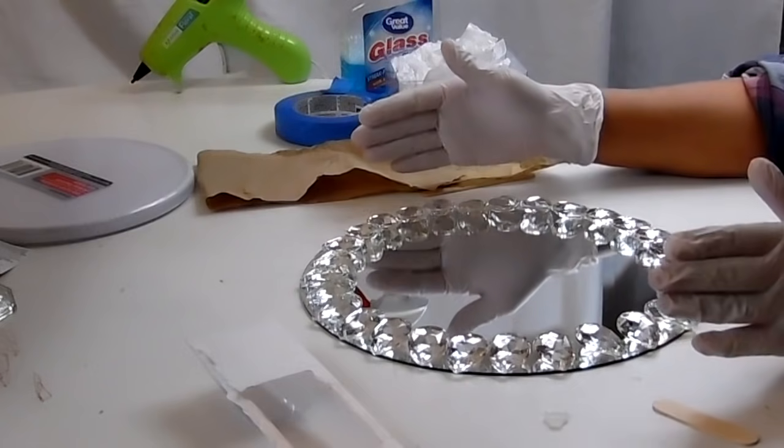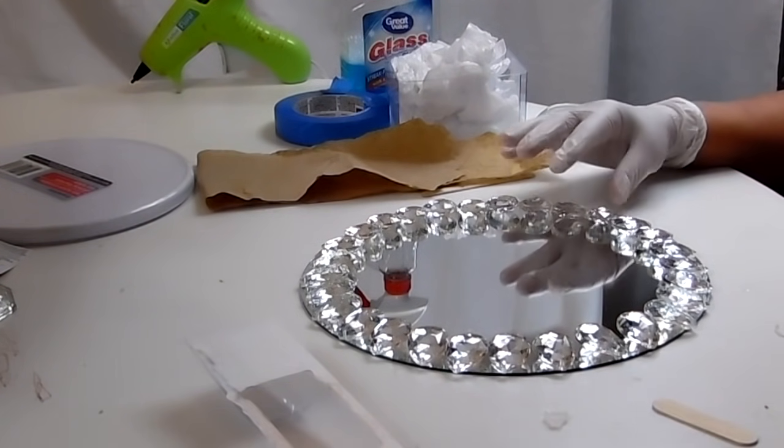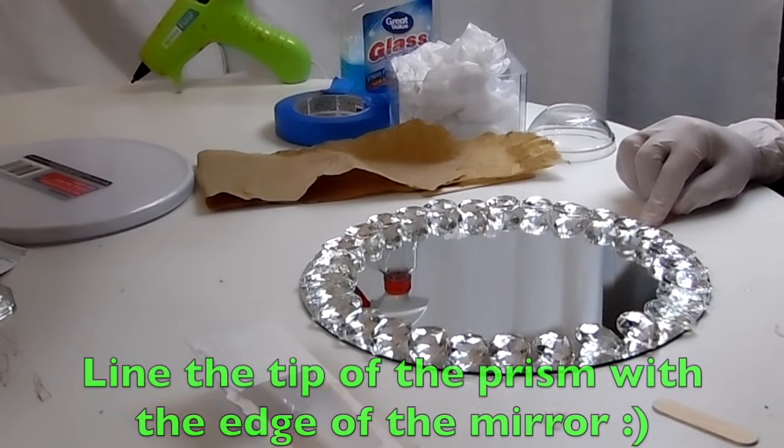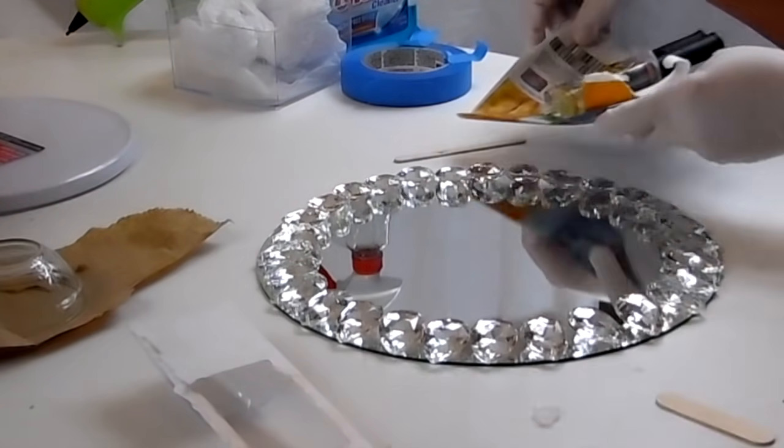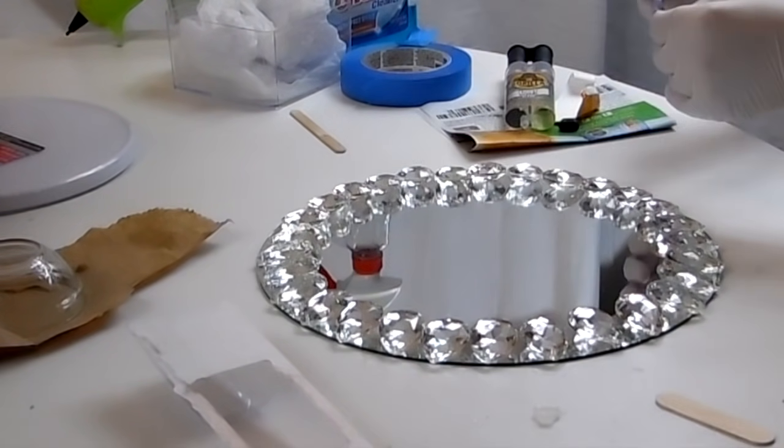So this is how it's going to look, guys. Isn't that beautiful already? But they will be sitting up just like this. I want the tip of the prism to be right at the tip of the mirror. Let's get the glue ready and get some tape ready. So here's a piece of tape.